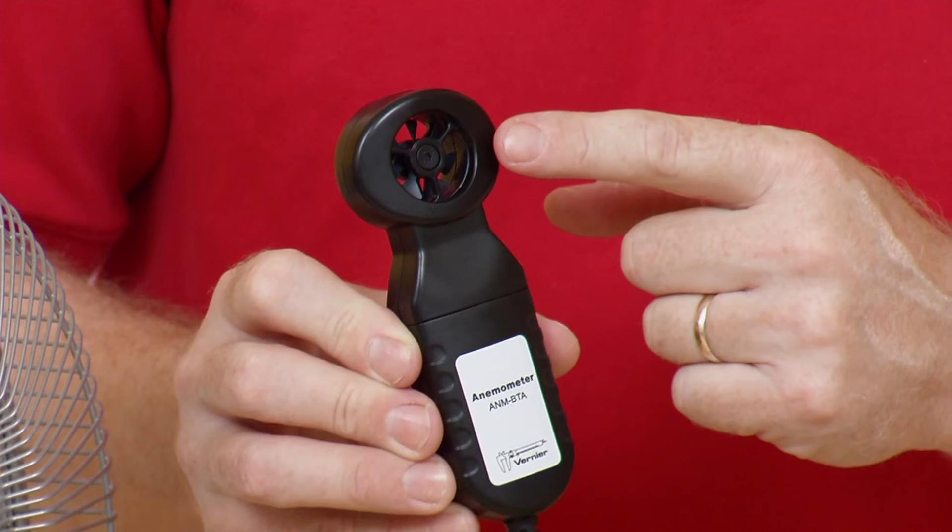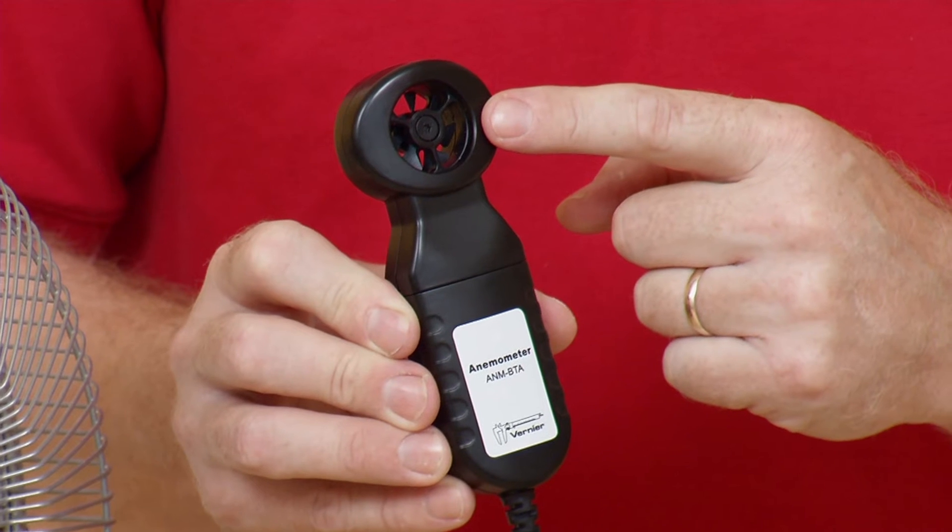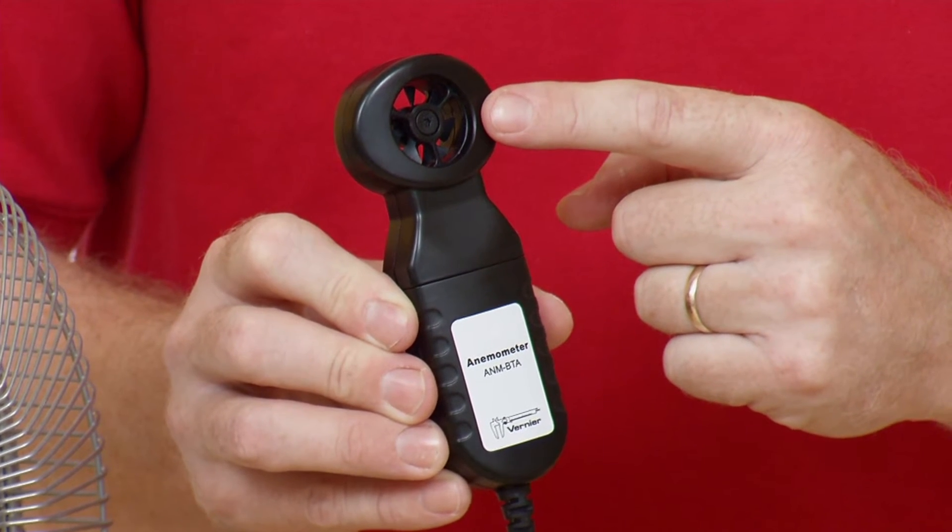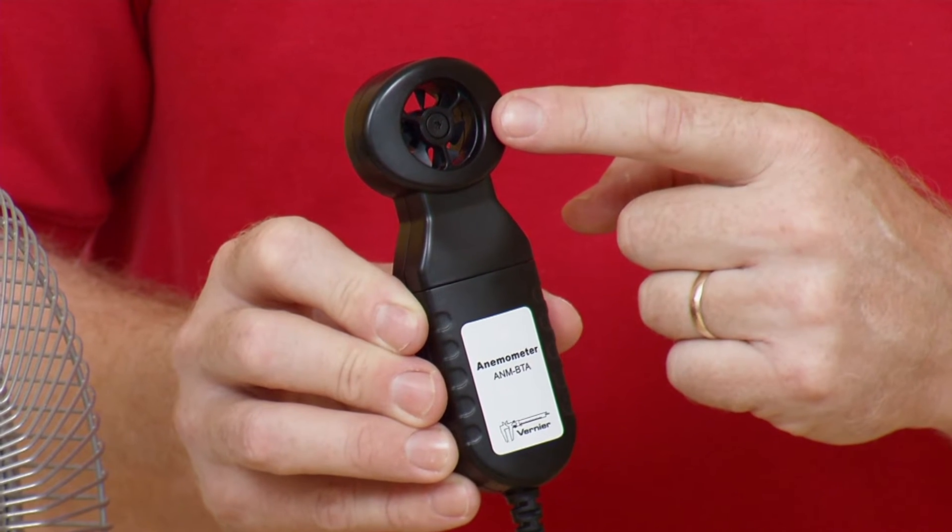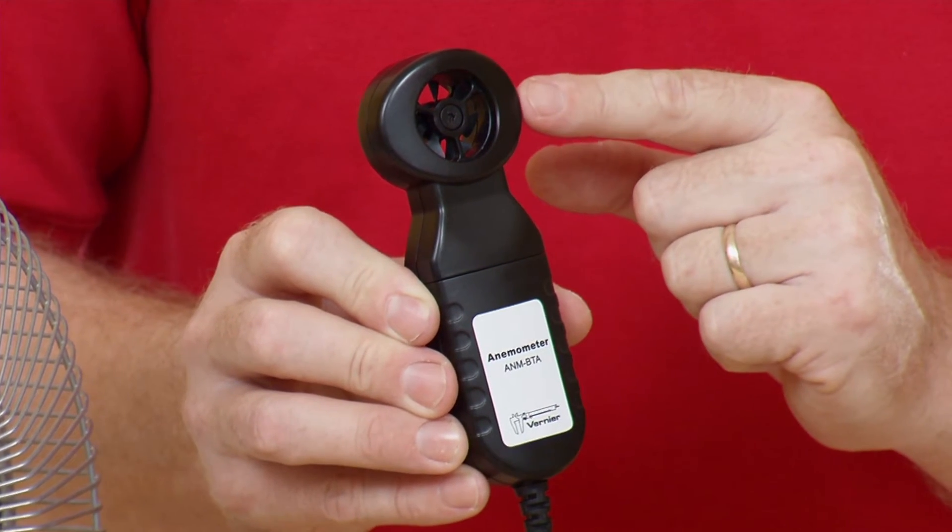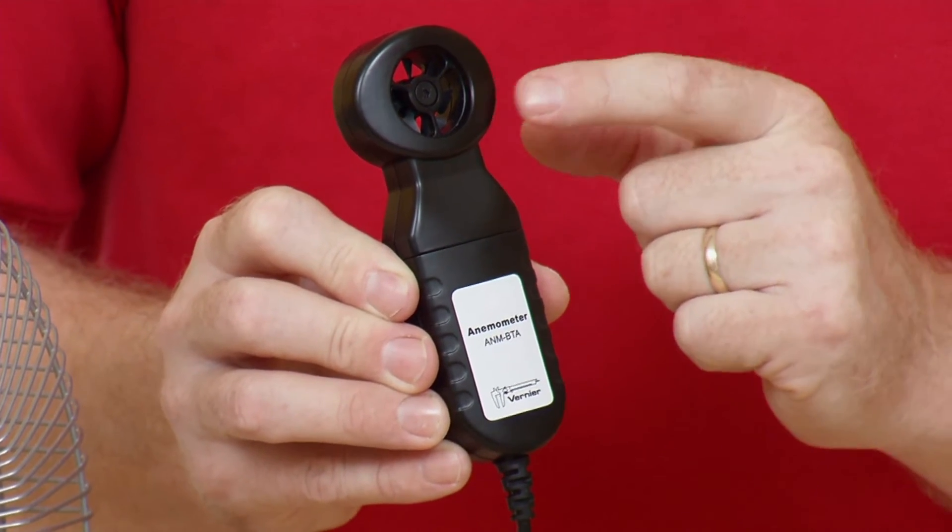And the way it works is that you have the impeller here, and as it turns, it actually turns a magnet, and it induces a current in a coil, and so it produces a voltage that the device can read. So the faster it spins, the higher the voltage, and you get your wind speed reading.